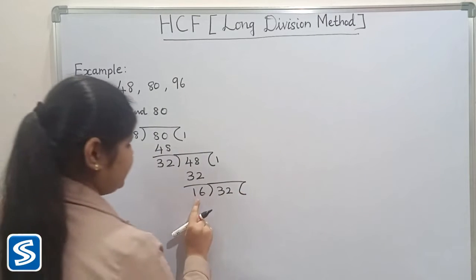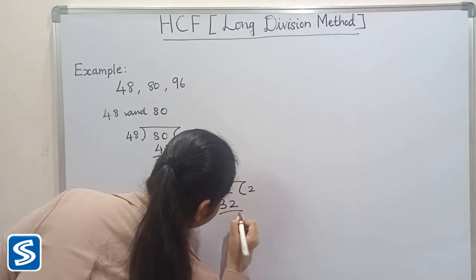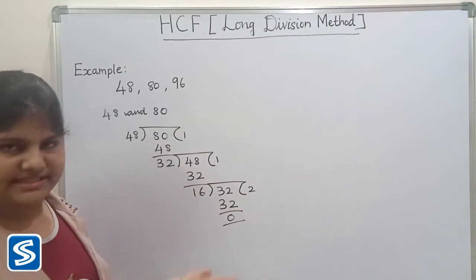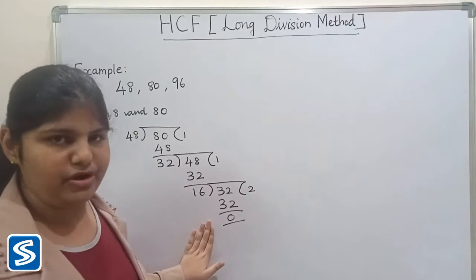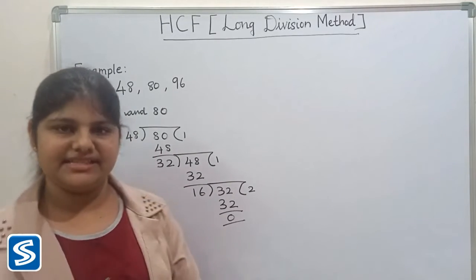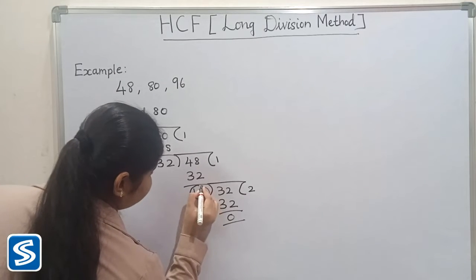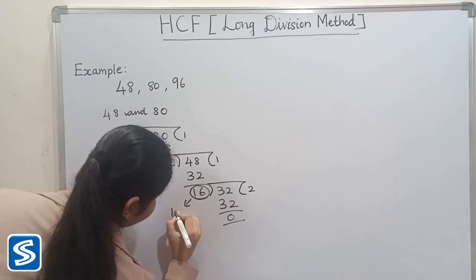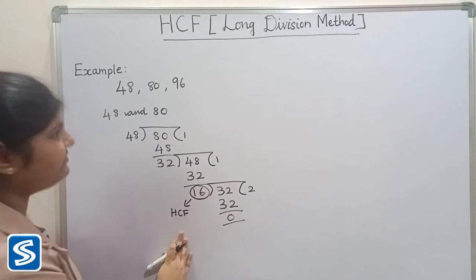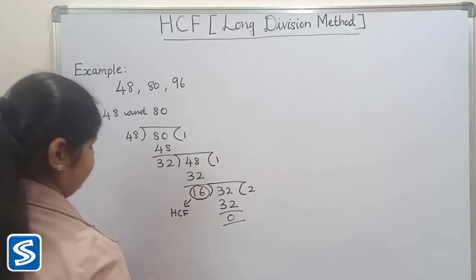So 16 twos are 32, so here our remainder is 0. Now we have to stop the process because the remainder is 0. The last divisor will be the HCF, so the HCF of 48 and 80 is 16.